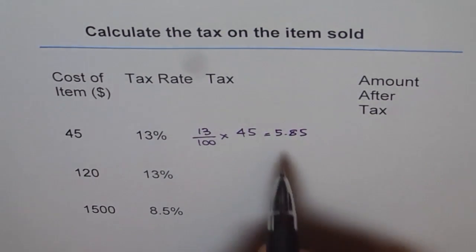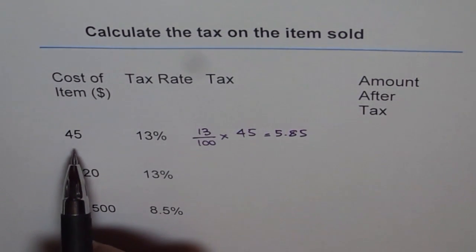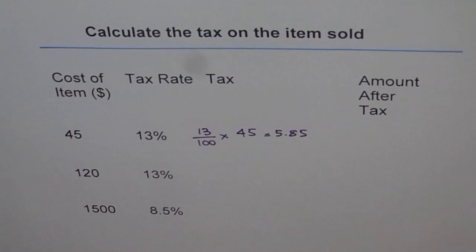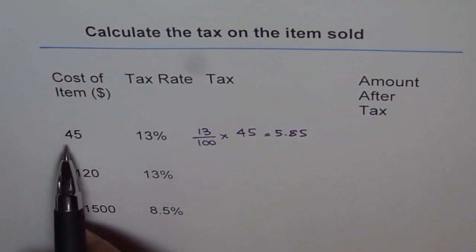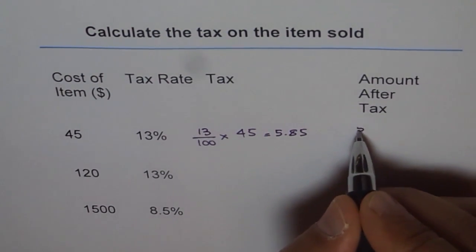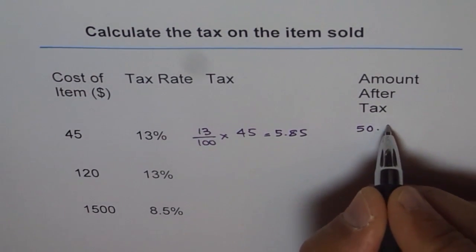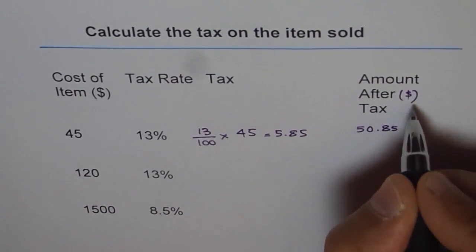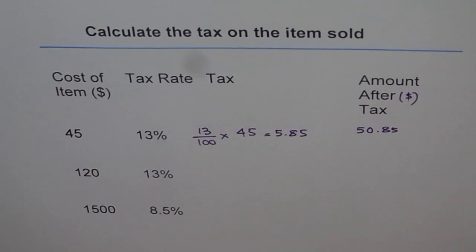So it is 13 times 45 divided by 100. You get 5.85. So that is the tax which you pay on an item which costs 45 dollars if the tax rate is 13%. Now amount after tax is 5.85 plus 45. If you add it, 45 plus 5 is 50 dollars and 85 cents. So you have to pay 50 dollars and 85 cents.